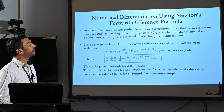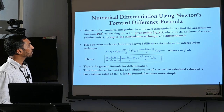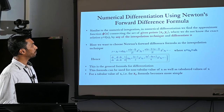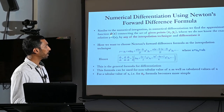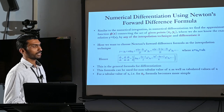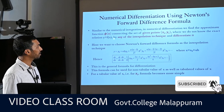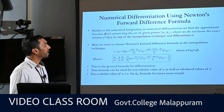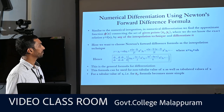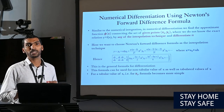First, Numerical Differentiation using Newton's Forward Difference Formula. Similar to Numerical Integration, in Numerical Differentiation we find the approximate function — the interpolating polynomial phi connecting the set of given points xi, yi. But we don't know the exact form of the relation connecting the x, y values, that is y equal to f. So by any of the interpolation techniques we find this phi and differentiate it. That is the basic principle we are doing in all Numerical Differentiation techniques.